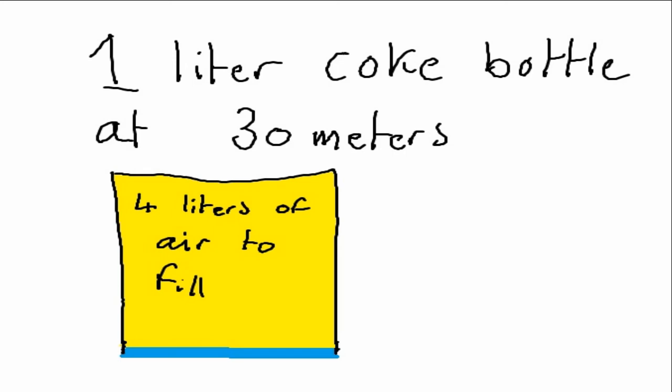So what we need to do is we need to take in more air per breath. And this causes the tanks to drain faster, in fact 4 times faster at 30 meters than on the surface.